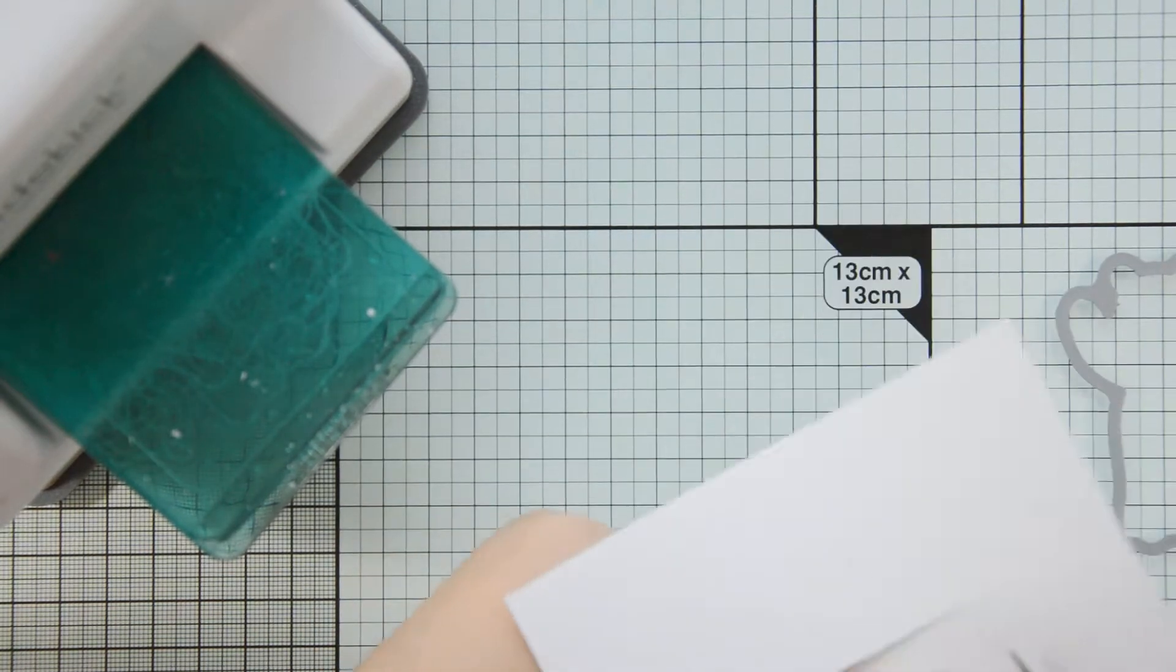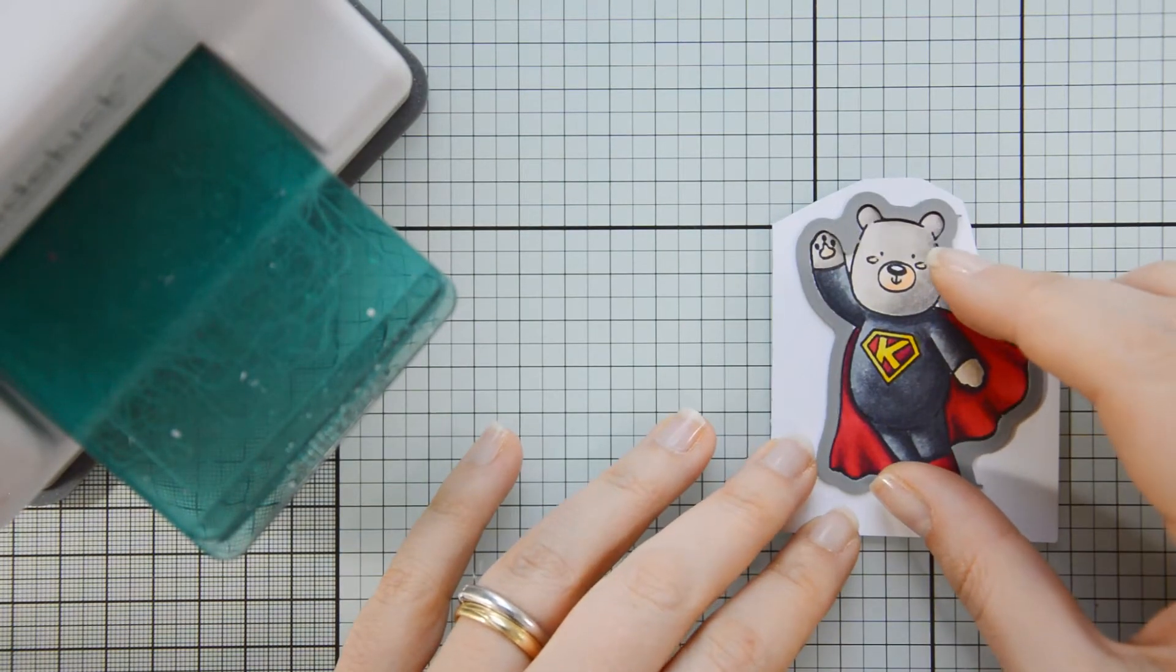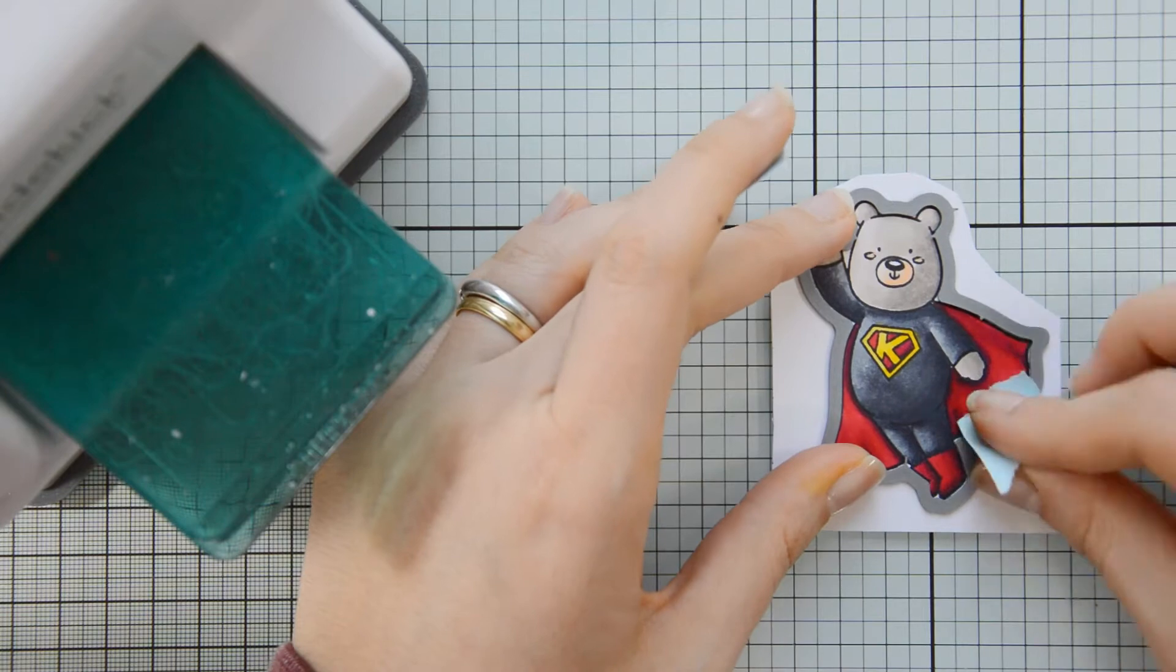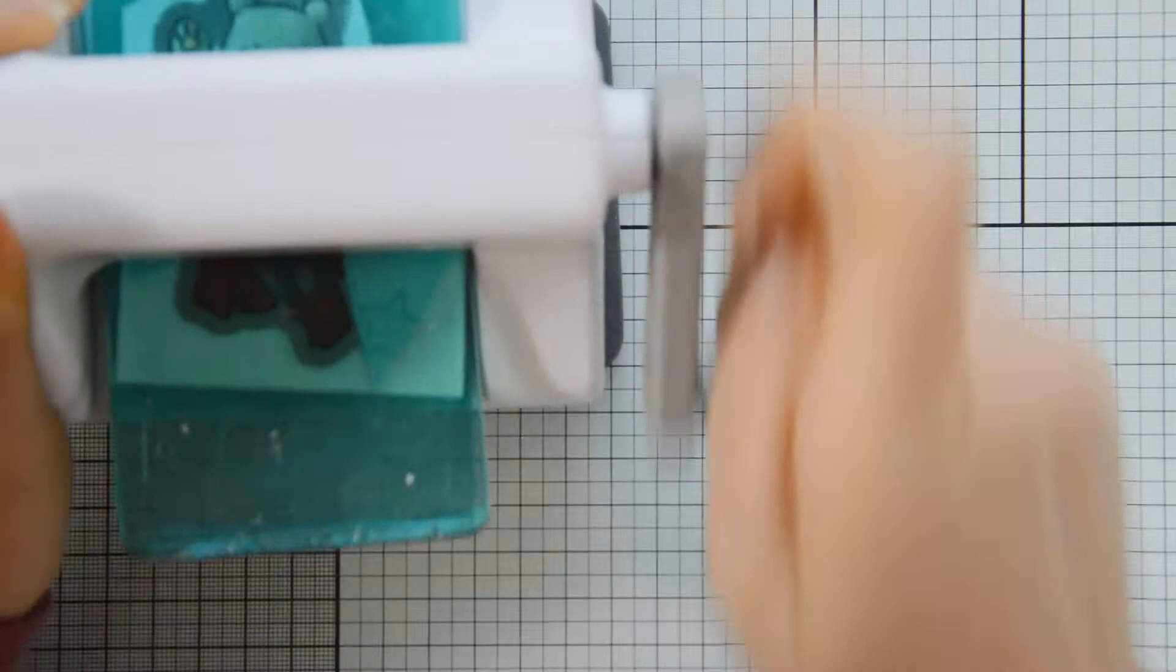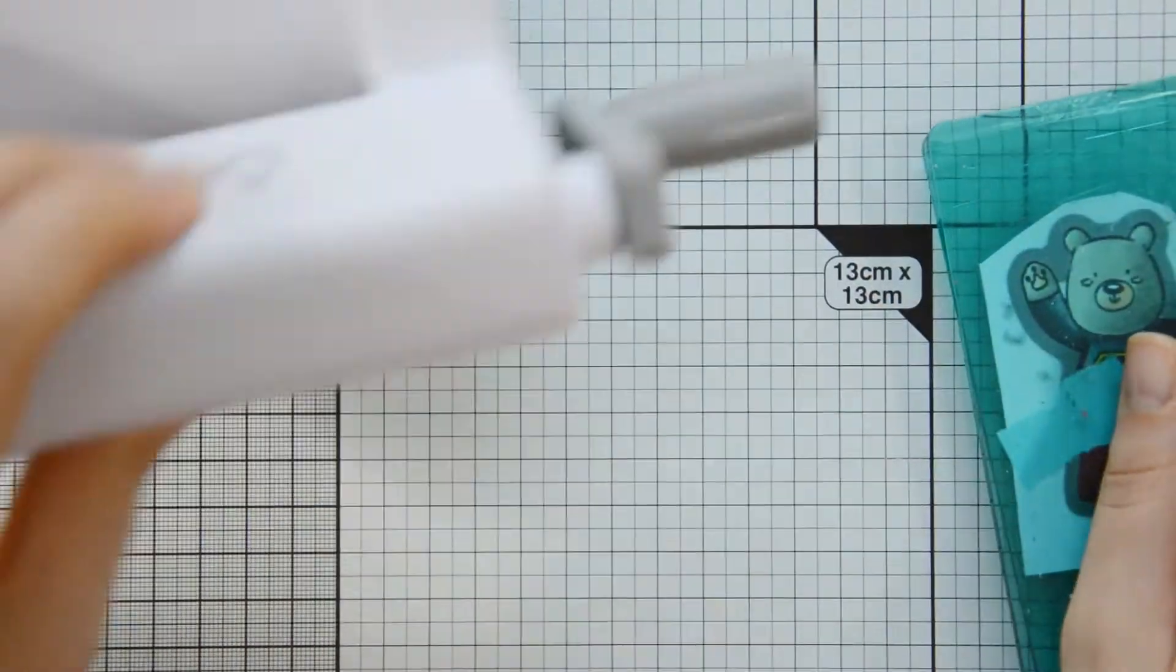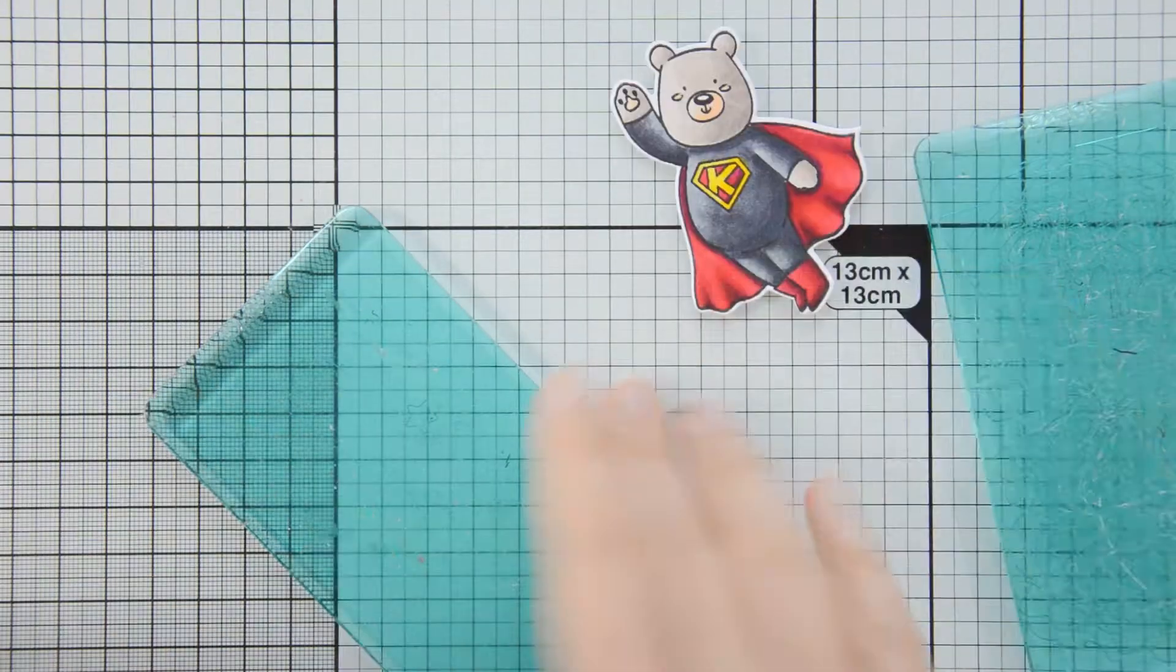After I was done with the coloring, I went ahead and die cut the image with the coordinating dies to the Kobe the Super Bear stamp set using my Sidekick machine. And then I could move on and start working on my background.